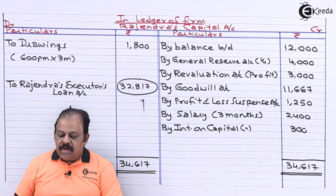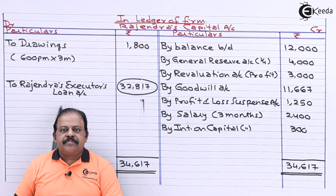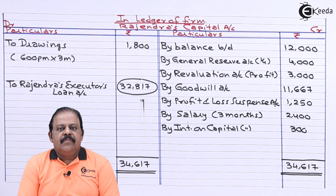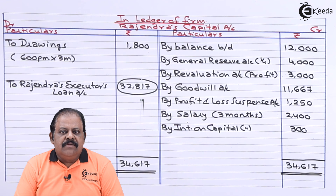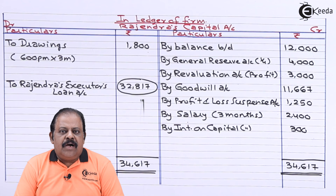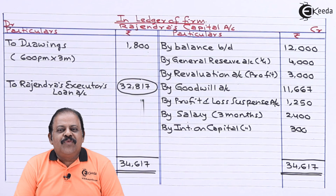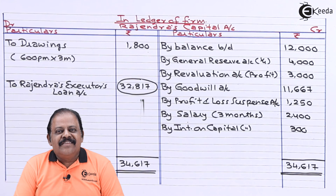In this question, we have discussed and learned various adjustments relating to a deceased partner's capital — particularly salary payable to the deceased partner for the period up to his death. Thanks for watching. Stay tuned with Ekeeda and subscribe to the channel.